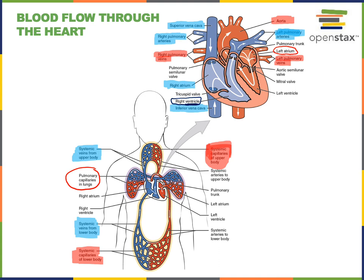The other major difference between the pulmonary and systemic circuits has to do with the length of blood vessels. The distance that blood travels from the left ventricle to the right atrium through the systemic circuit is much longer than the distance blood travels from the right ventricle to the left atrium through the pulmonary circuit.